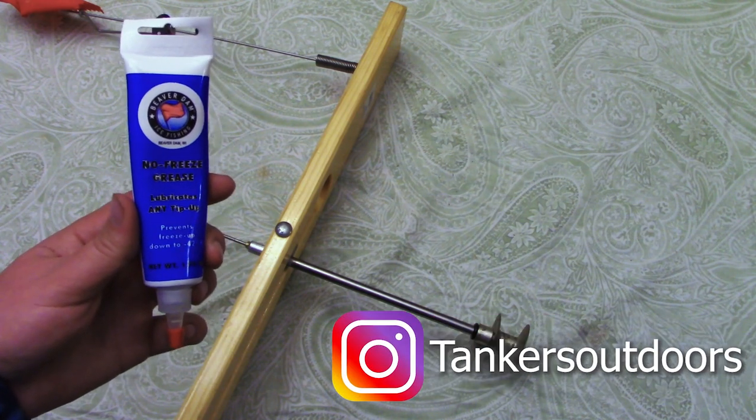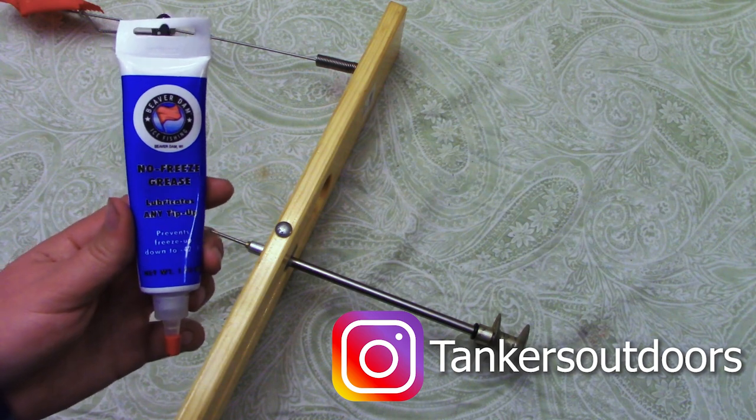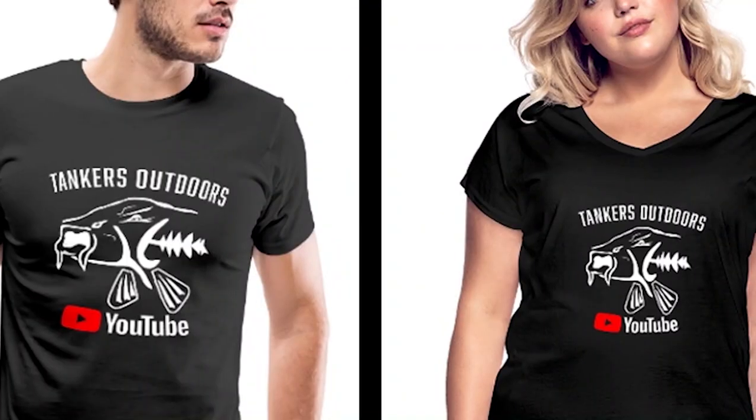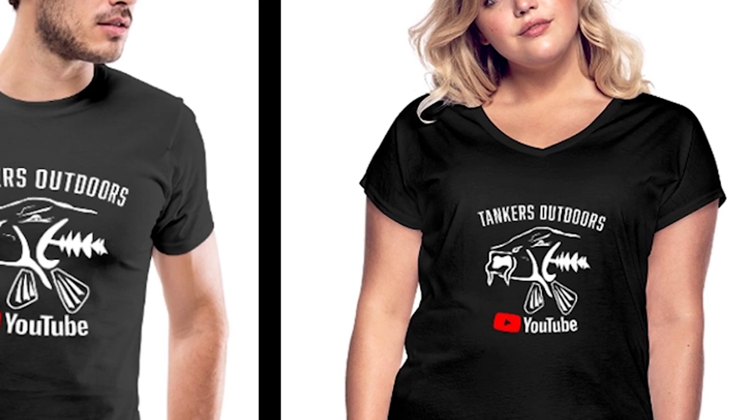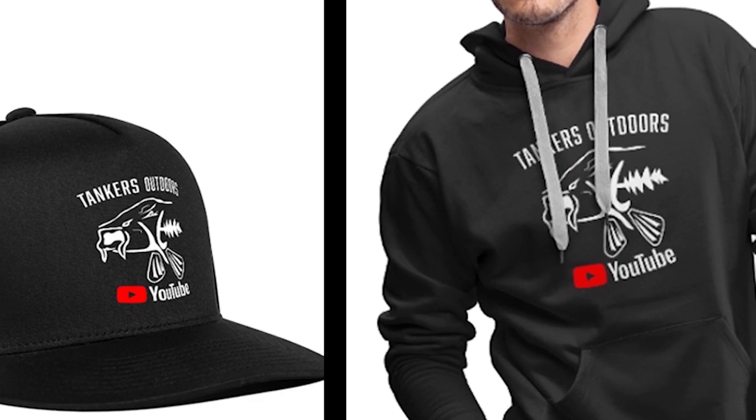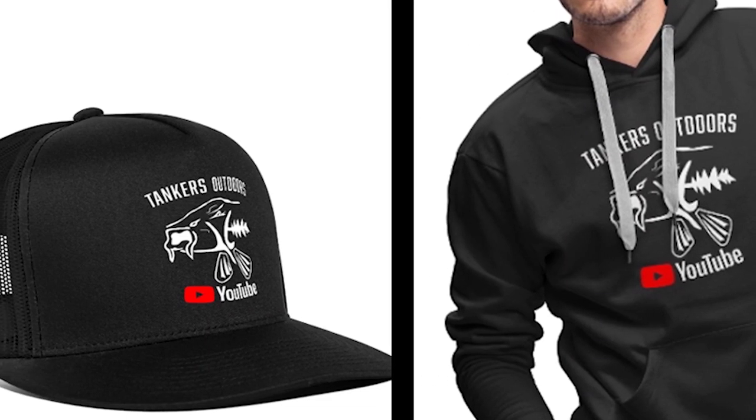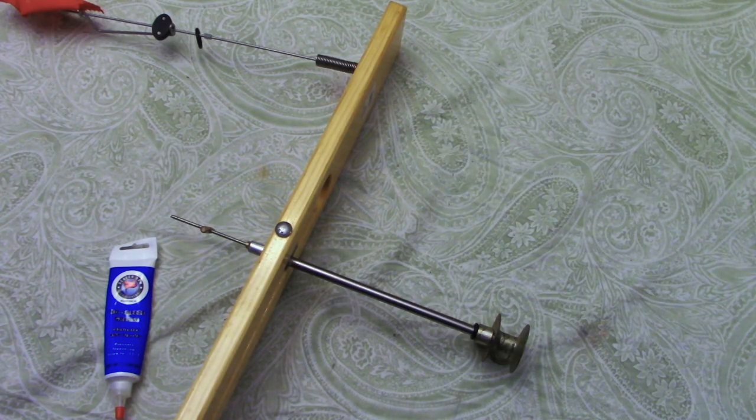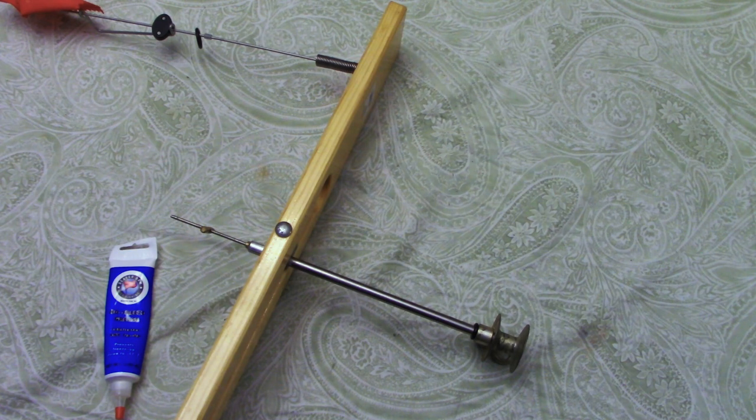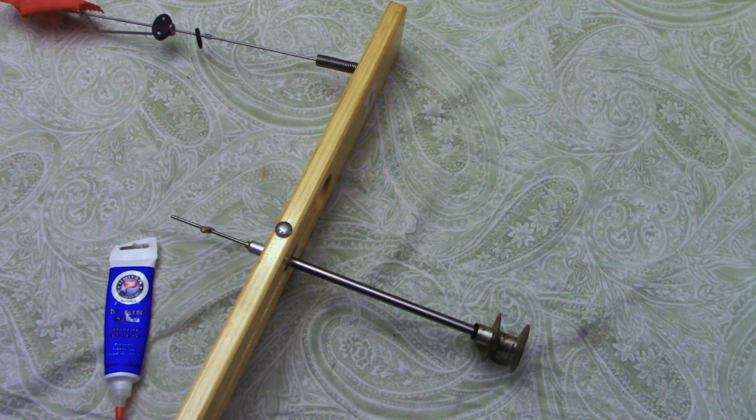You can check me out on Instagram which is linked down below. I also have merchandise out now which includes t-shirts, sweatshirts, hoodies, hats, mugs, sacks and bags, backpacks, and all sorts of things. You can check that out as well as the Instagram which are both linked in the description. I look forward to seeing you on the next video of Tinkers Outdoors.